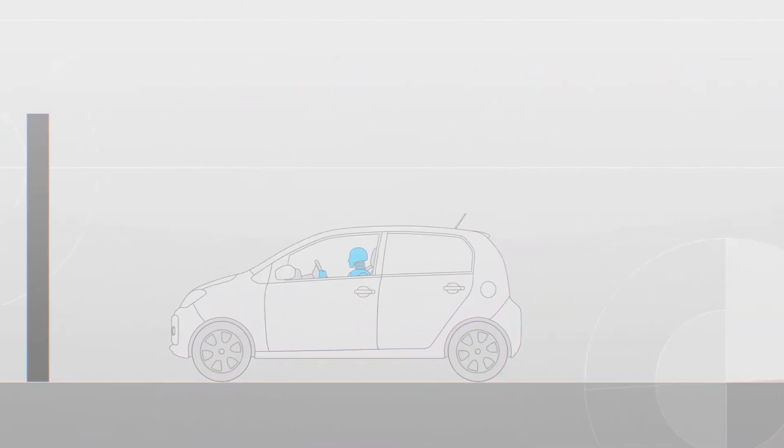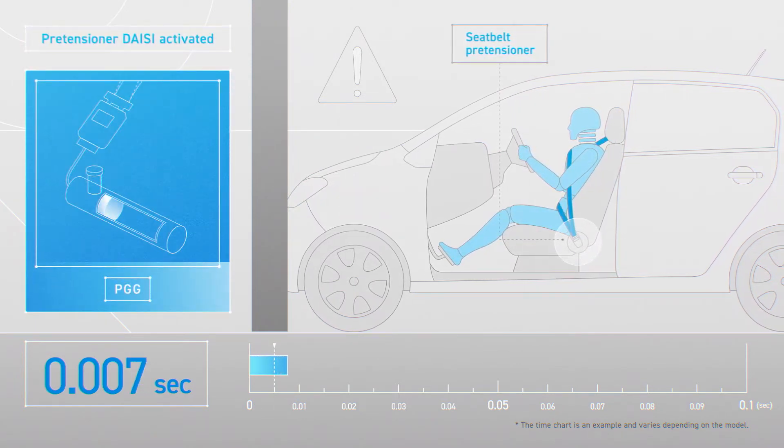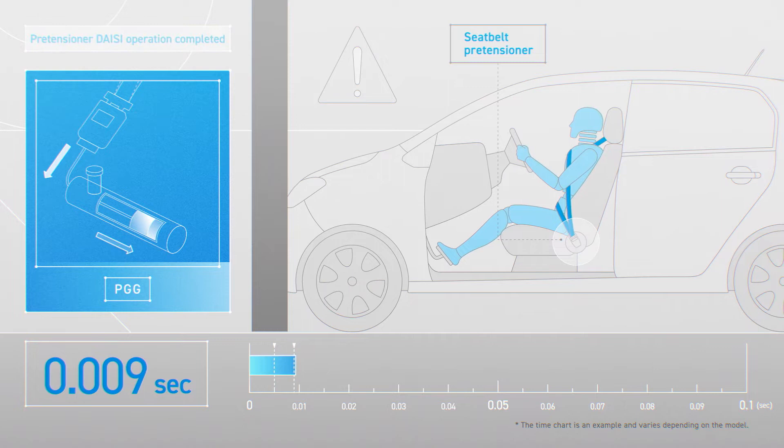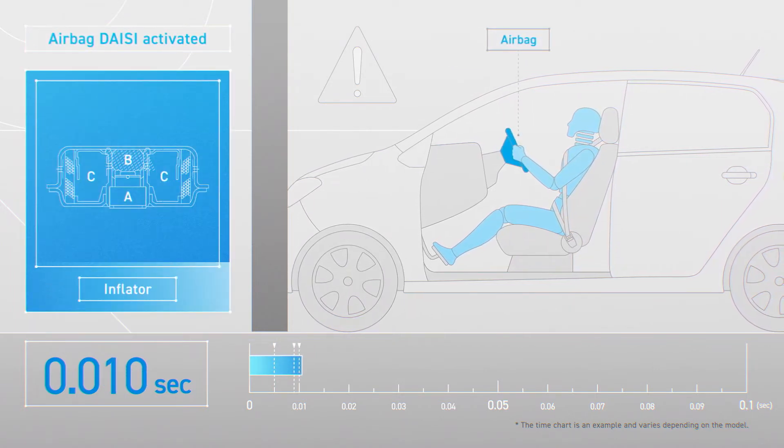We will now explain its mechanism in detail. When the car detects a collision, the Daicel located in the pretensioner is activated first. The pretensioner device pulls the seatbelt to restrain the body.